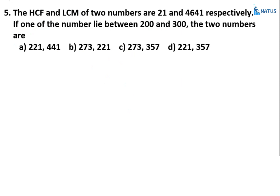Fifth question: The HCF and LCM of two numbers are 21 and 4641 respectively. If one of the numbers lies between 200 and 300, find the two numbers. Without the range condition the answer cannot be determined, but the condition narrows it down.